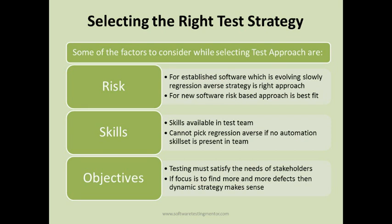Testing must satisfy the needs of stakeholders — that is another factor to consider when selecting the test approach. What are the objectives you want to achieve? If the focus is to find more and more defects, then dynamic strategy makes more sense. If the stakeholders need all end-to-end scenarios to work fine, dynamic strategy is also the best fit. You need to select the test approach based on the objectives of the stakeholders.